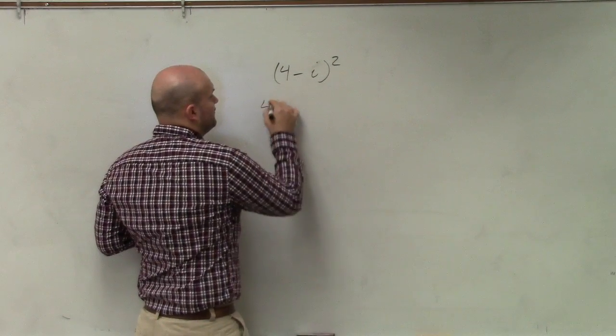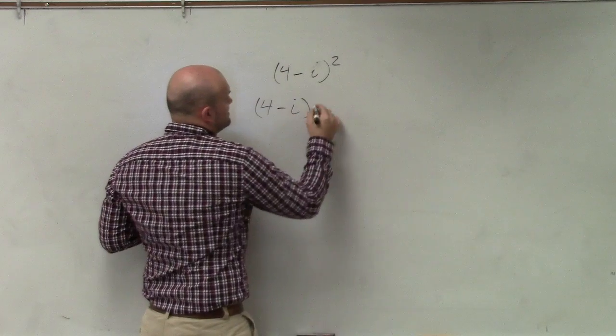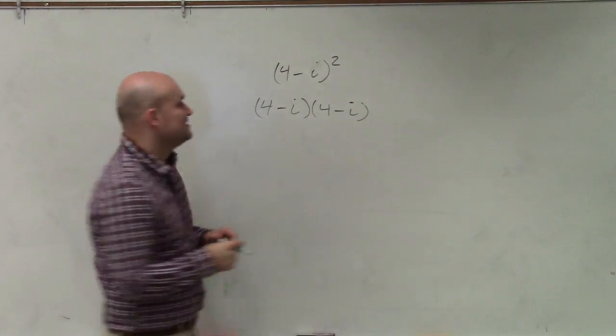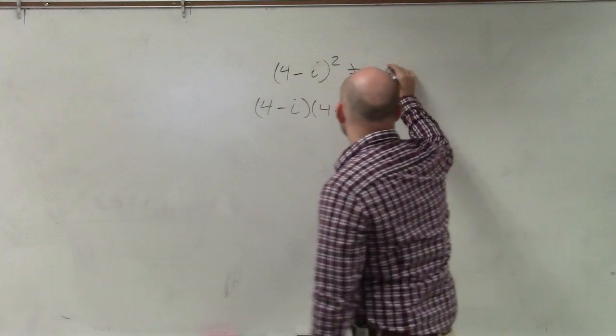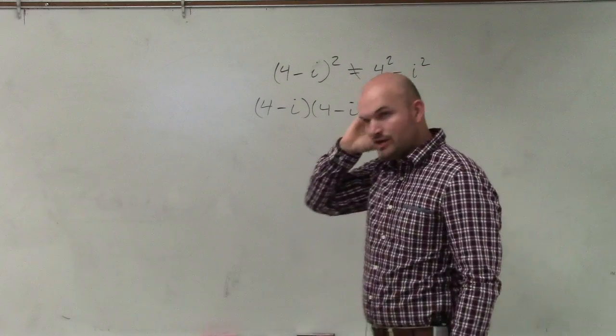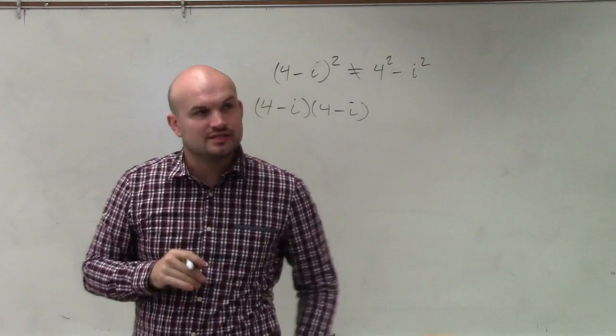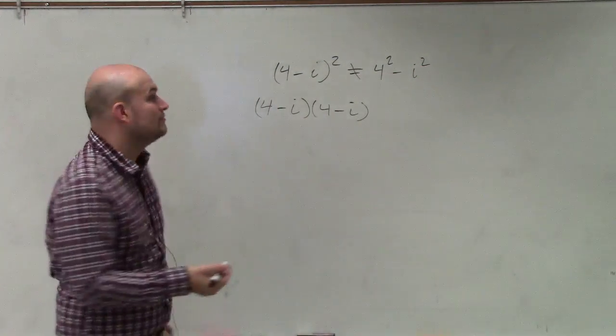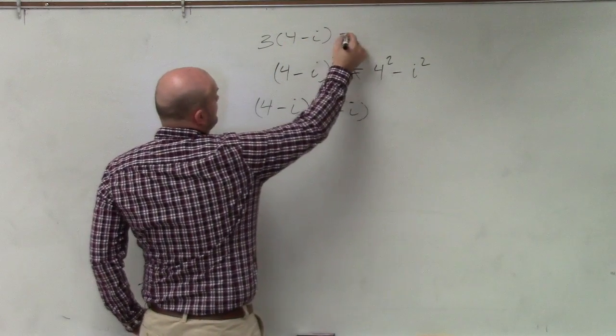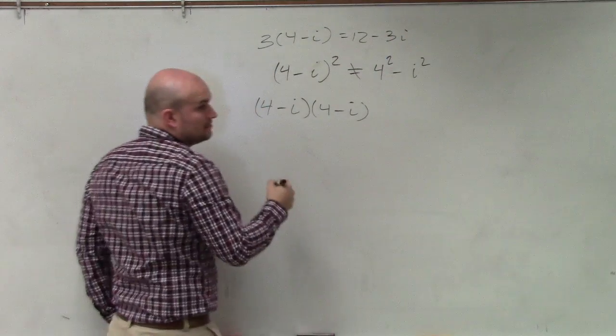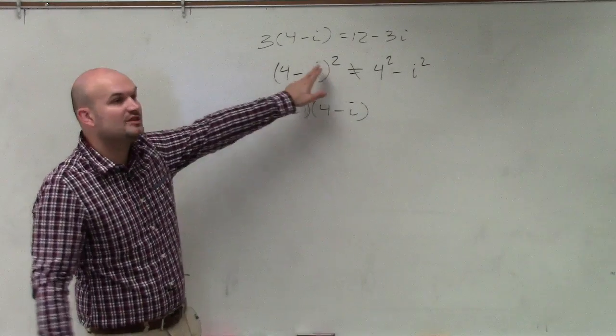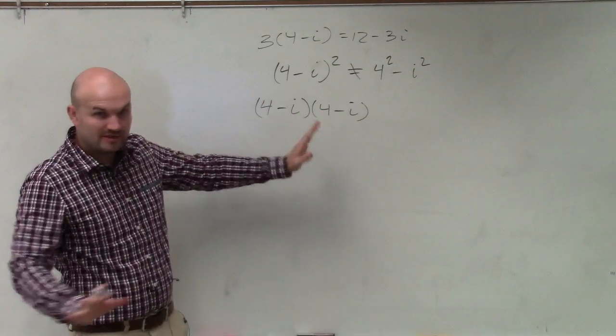So this is (4 - i) times (4 - i). The big misconception that everybody seems to do is they want to distribute the squared. You cannot do that across addition and subtraction. We do that when we have like a number, but you cannot use distributed property across multiplication and division with a power. Cannot do it.